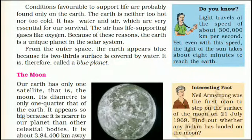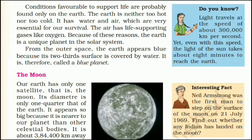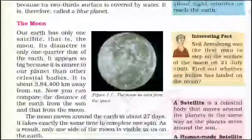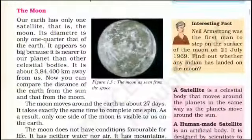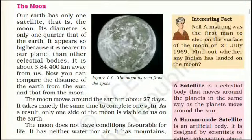The Moon: Our Earth has only one satellite — the Moon. Its diameter is only one quarter that of the Earth. It appears so big because it is nearer to our planet than other celestial bodies. It is about 3,84,400 km away from us.